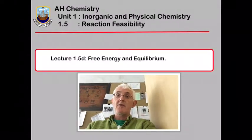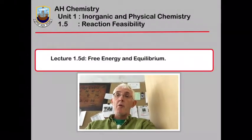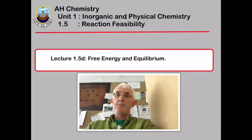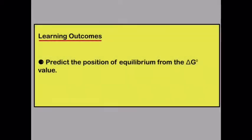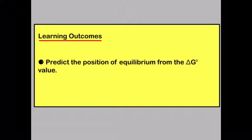In this, the last lecture in section 1.5, we will look at free energy and equilibrium. By the end of this lecture, you should be able to predict the position of equilibrium from the delta G-naught value.